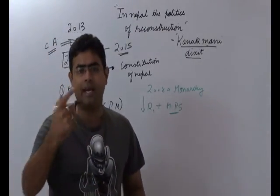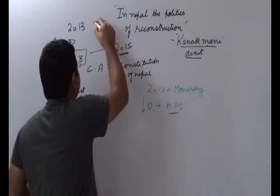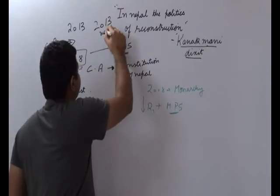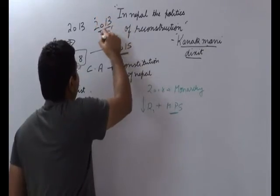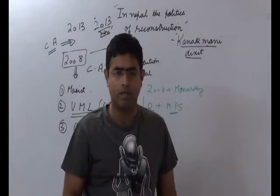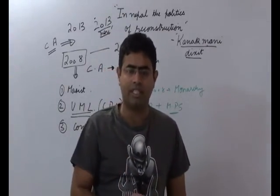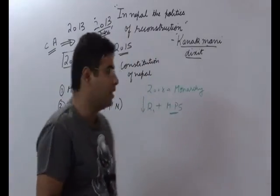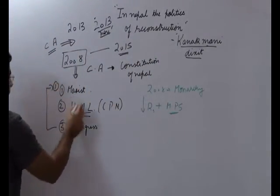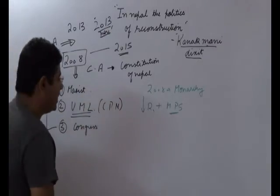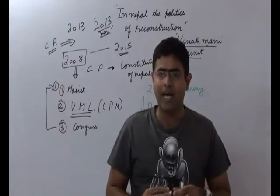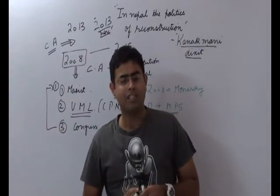Again, elections were held in November 2013. After these elections, a new Constituent Assembly was formed. In the new Constituent Assembly, it is the Congress that scored the first rank and the Maoists have been relegated to the third position.